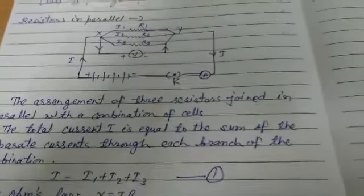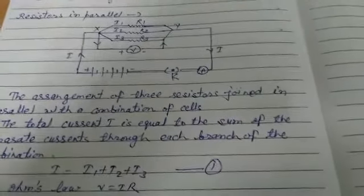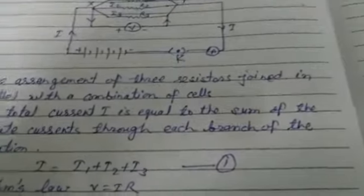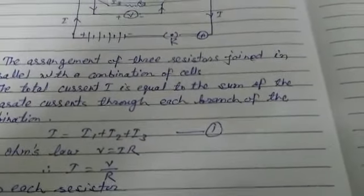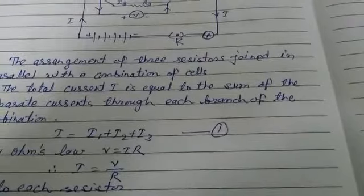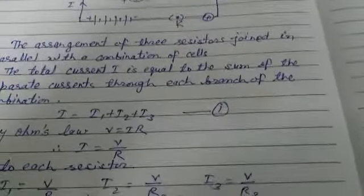Now let's see the arrangement. The arrangement of three resistors joined in parallel with a combination of cells. The total current I is equal to the sum of the separate current through each branch of the combination.